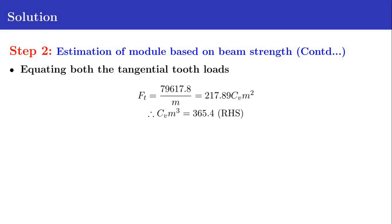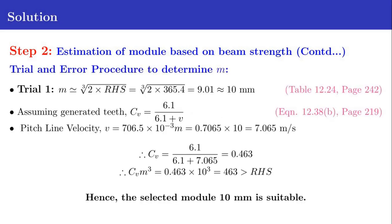From this relation we get CV times M cubed equals 365.4. We take 365.4 as RHS and CV times M cubed as LHS. For the module to be selected, the value CV times M cubed should be greater than 365.4.